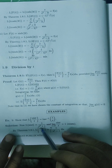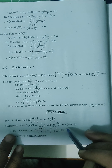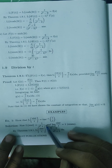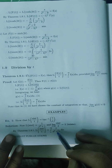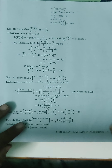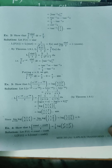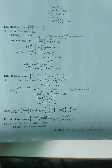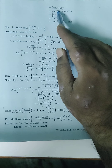Therefore, by the previous theorem, Laplace of sin(t)/t equals integration from s to infinity of F(u) du. What is F(s)? F(s) is 1/(s²+1). Therefore, f(u) = 1/(u²+1), so the integral becomes integration from s to infinity of 1/(u²+1) du. The limits are from s to infinity.